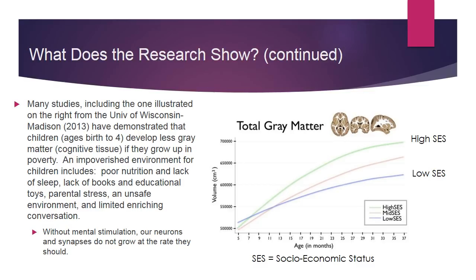If you look at the chart, the green line represents kids from a high socioeconomic status — mom and dad tend to make good money and they have a lot of gray matter, the cognitive tissue that will eventually become the neurons and synapses that allow for learning. The blue line is low socioeconomic status, and there's a significant drop in gray matter. In an impoverished environment, children are not getting fruits and vegetables, not getting enough protein, may rely exclusively on fast food, and are not on a proper sleep schedule.